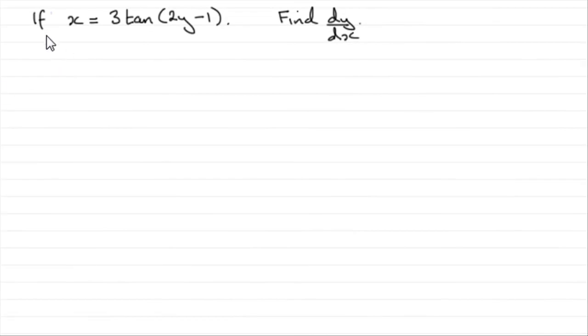Hi. Now, in this question we're given that x equals 3 tan of 2y minus 1, and we've got to find dy by dx.